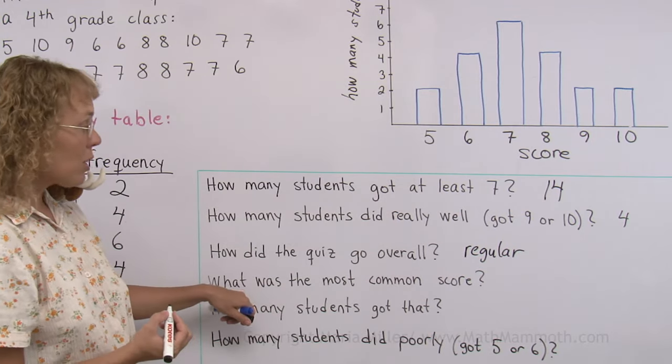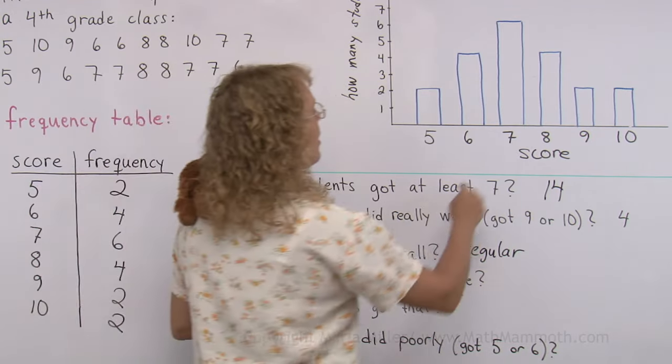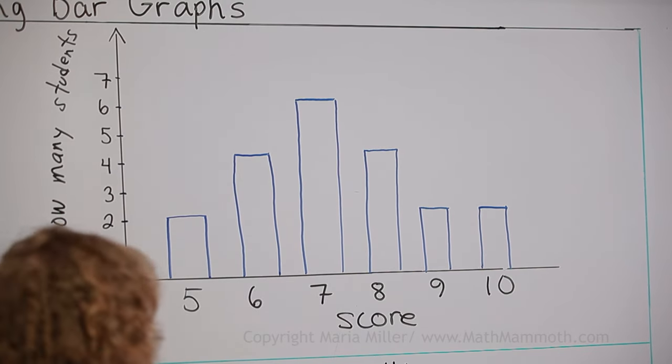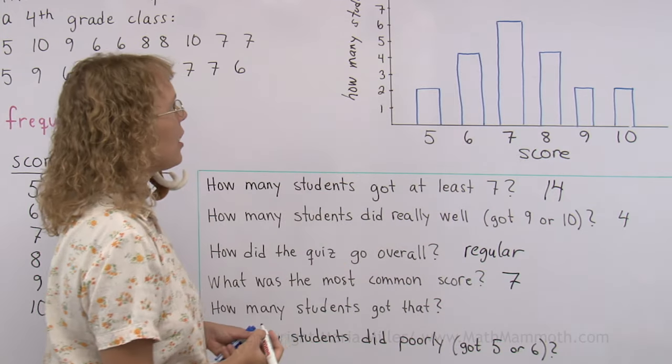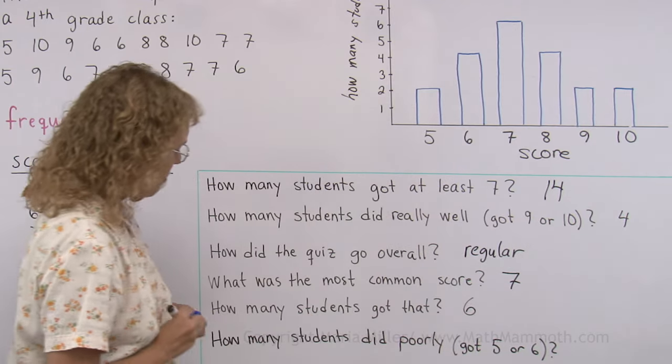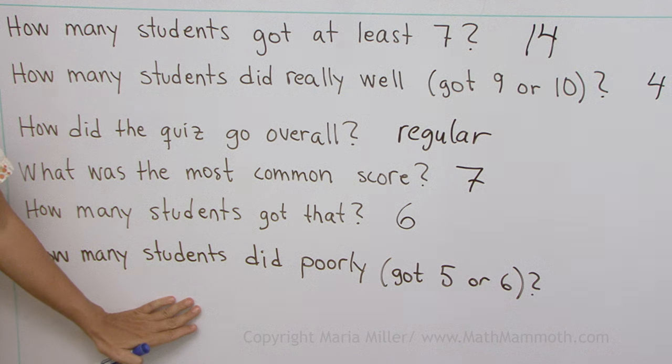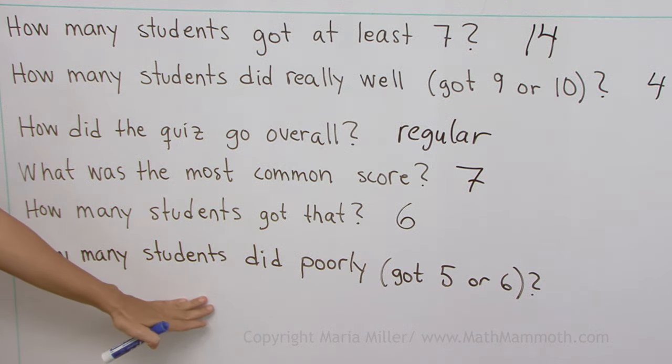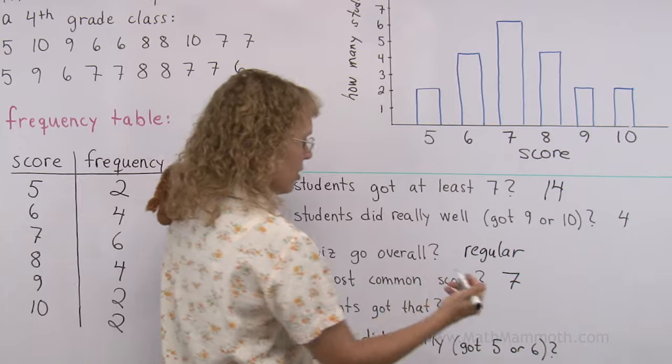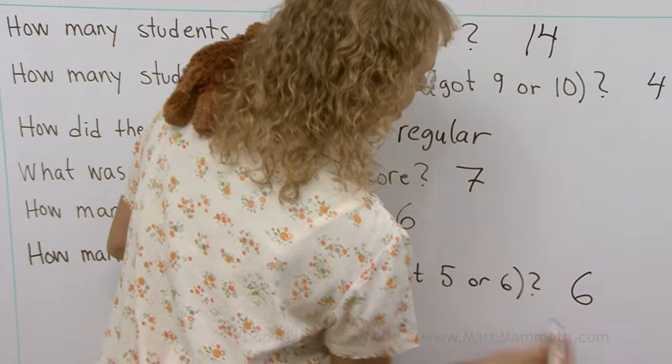What was the most common score? Okay, the highest bar here is for the score seven. And how many students got that? That was six students, right? And then how many students did poorly? They only got five or six. Can you read the graph and see how many students did poorly? Two students and four. So we have six students here.